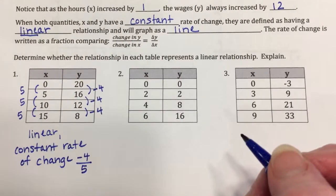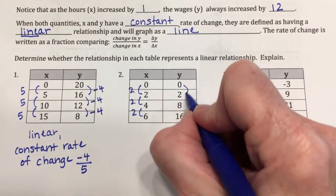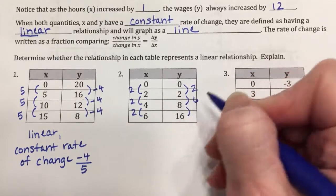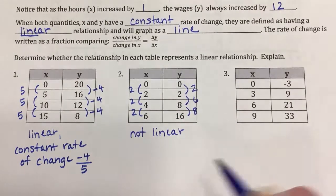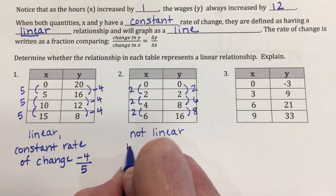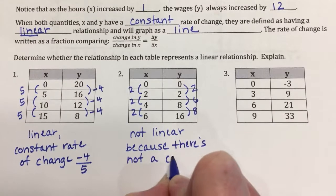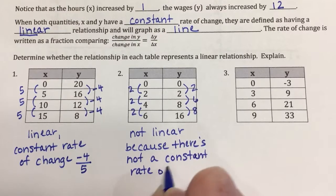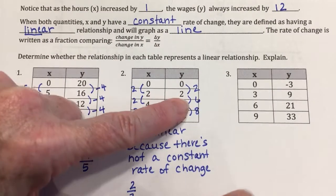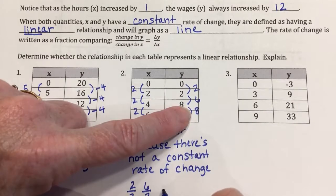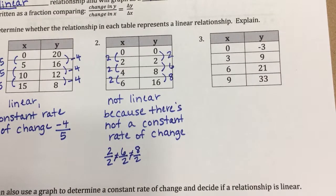For example two: X goes up by 2 each time. But looking at Y: from 2 to 8 is up by 6, and from 8 to 16 is up by 8. This relationship is not linear because there is not a constant rate of change. The first time ΔY/ΔX was 2/2, the second time it was 6/2, and the third time it was 8/2 — these are not equal, so this is not linear.